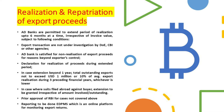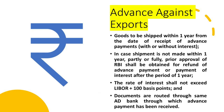Timeline for advance exports: goods must be shipped within one year from the date of advance payments. Certain companies may receive export advances from their clients abroad. In such cases, the product should be shipped within one year from the date of receipt of advance payments, with or without interest. The Indian exporter has the liberty to pay interest on the advance payment received.